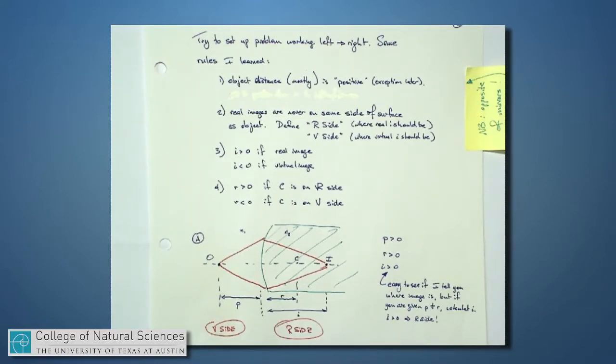The rules how to use these equations go right back to how we did mirrors. We have to set up a sign convention. Some numbers are positive if things are on one side, and some numbers are negative if things are on the other side. And we need to define which side of the lens or the reflecting surface is positive and negative.